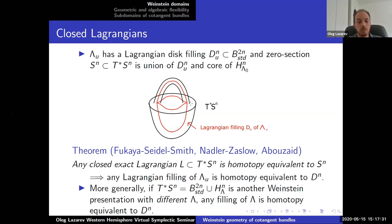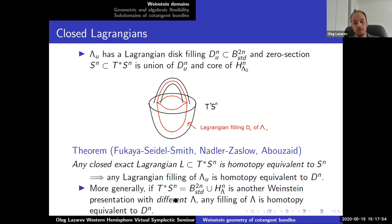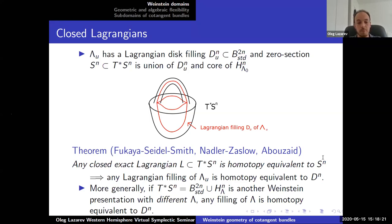More generally, you could consider a different presentation of T*S^n obtained by doing handle slides, handle cancellation, and handle creation to get a different hypothetical presentation with possibly a different lambda. It's still true that any Lagrangian filling of that lambda is homotopy equivalent to a disk — because if you had a filling with different topology, you could cap it off and get a closed exact Lagrangian with different topology from S^n, contradicting this theorem. So for any presentation of this form, any filling is homotopy equivalent to a disk.